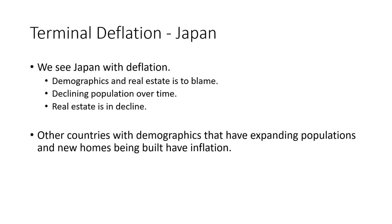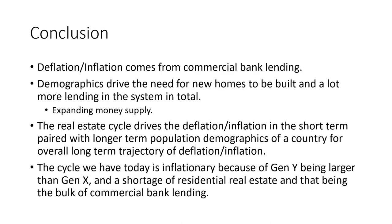Other countries with demographics that have expanding populations and new homes being built have inflation — it is inflationary for those times. The conclusion is: inflation and deflation come from commercial bank lending. Demographics drive the need for new homes and more lending in the system — an expanding money supply, which is inflationary. The real estate cycle drives deflation and inflation in the short term, paired with longer-term population demographics for the overall long-term trajectory. The current cycle is inflationary because Gen Y is larger than Gen X, and there's a shortage of residential real estate.